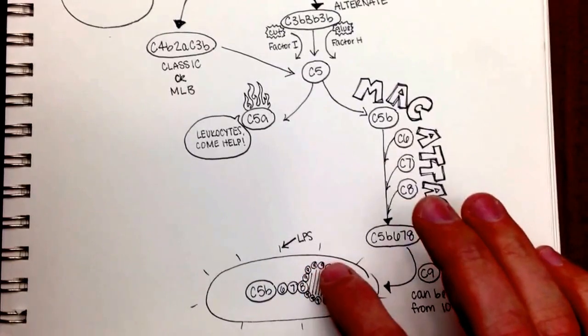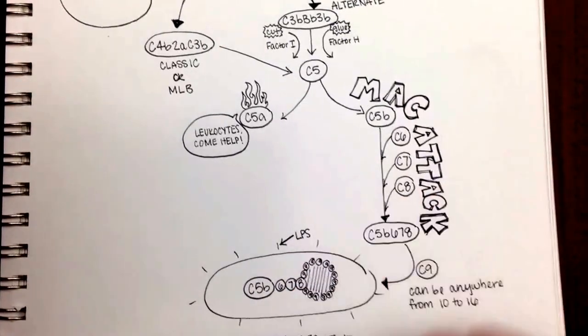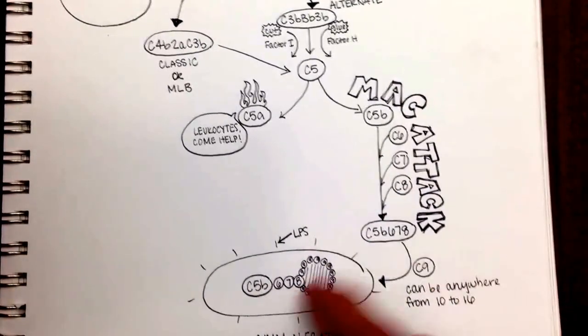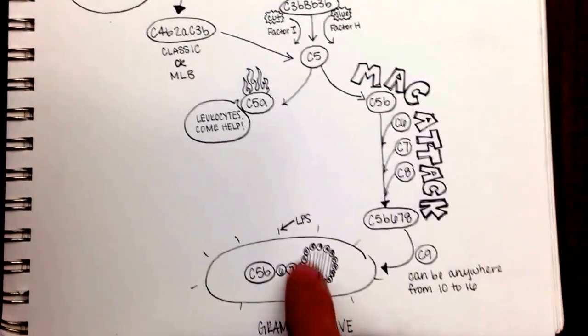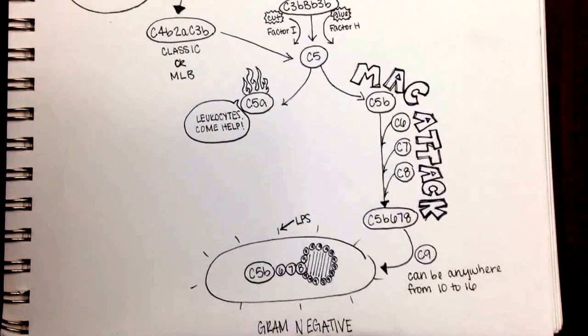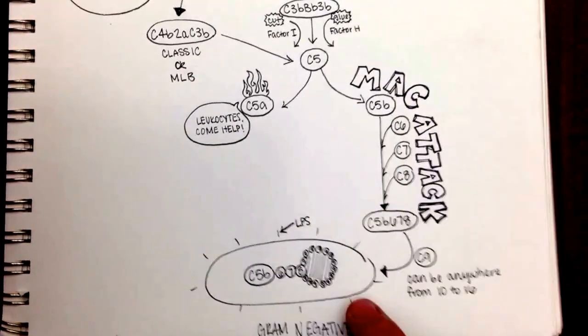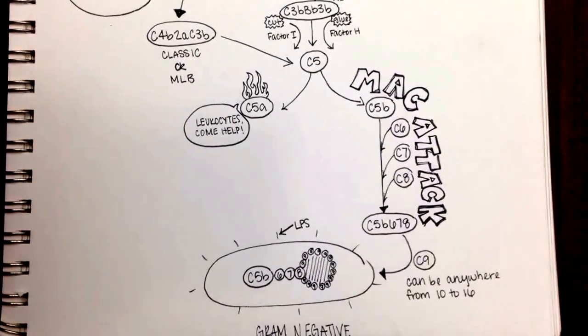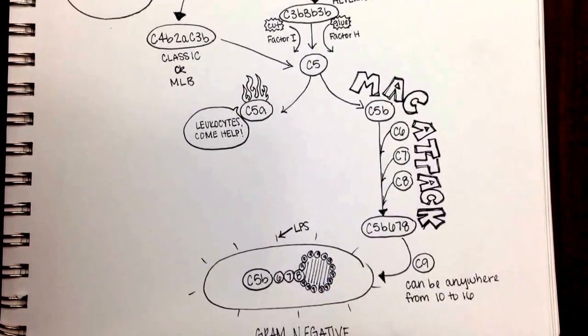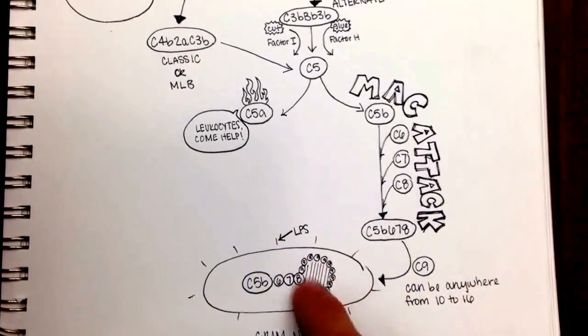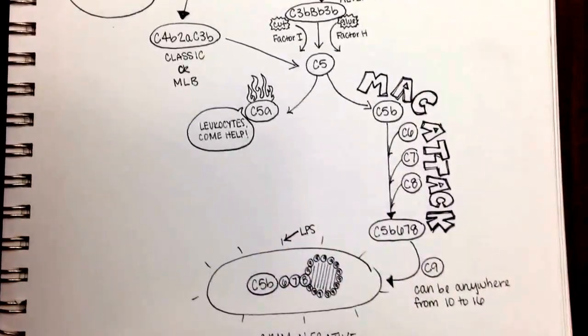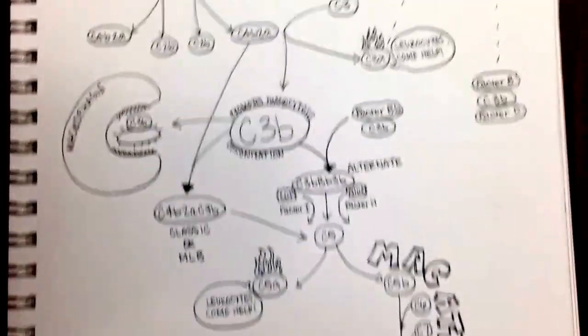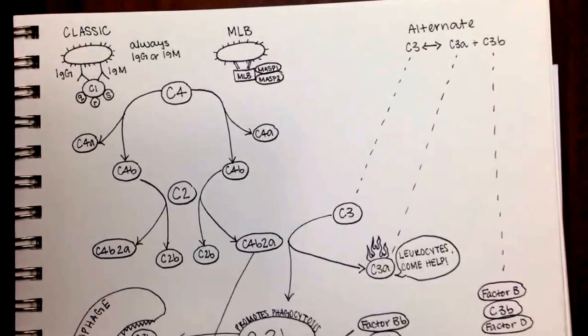And what these C9s do is they make a pore in the bacteria that allows a bunch of water to come in and it will burst the bacteria. Now remember, this kind of pore is probably going to be formed on a gram-negative bacteria because it does not have that thick peptidoglycan wall. It has that thinner wall, so it's more able to have a pore put in it. And we have some lipopolysaccharides here. So we can see that's the whole complement cascade pathway.